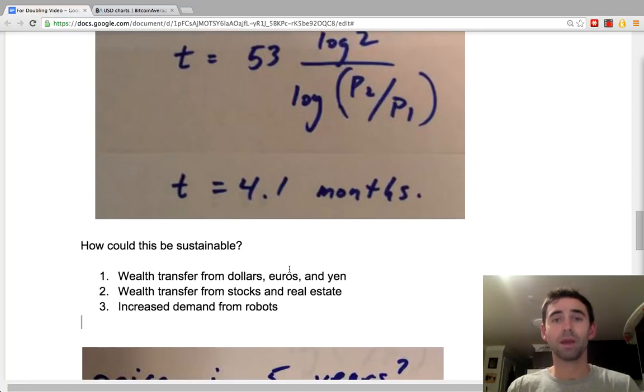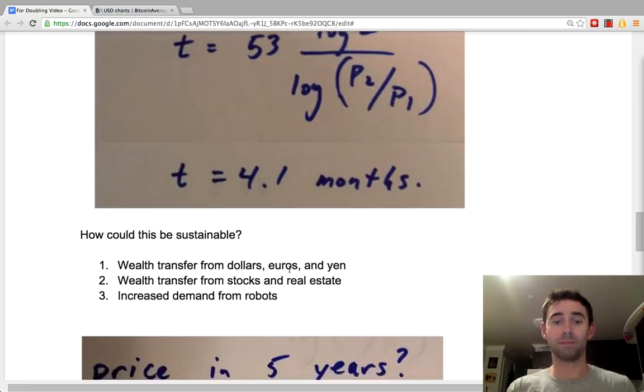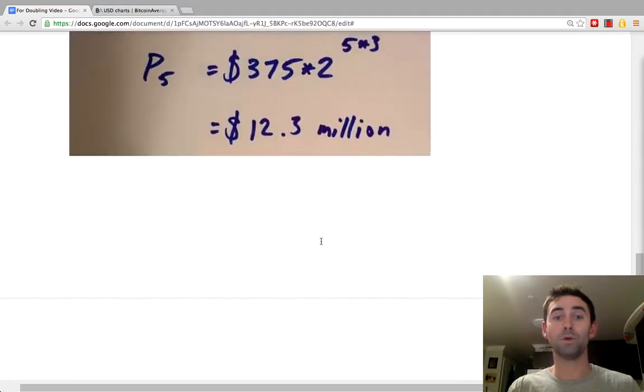If you have one Bitcoin today, how much do you think that's going to be worth in, say, five years? Well, we have the formula, so let's just plug it in. P in five years equals 375 times 2 to the power of 15—that's how many times four months goes into five years. What does that equal? Boom! 12.3 million.